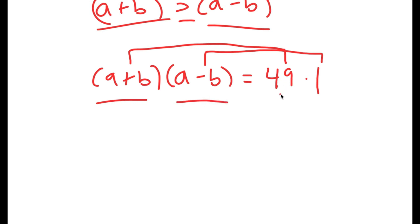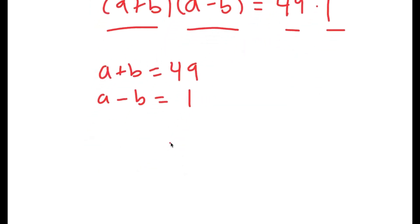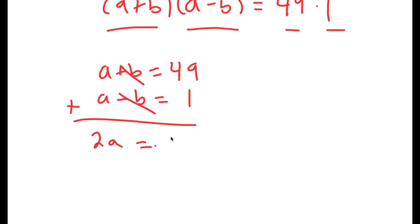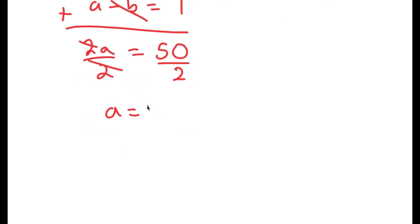So because a plus b is greater than a minus b, we can say that a plus b is equal to 49 and a minus b is equal to 1. What we have here is a system of equations, and I'm going to add these equations. a plus a is 2a, b and negative b cancel out, and 49 plus 1 is 50. So I get that 2a is equal to 50, and dividing both sides by 2, I get a is equal to 25.